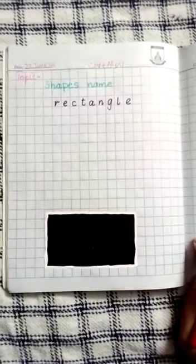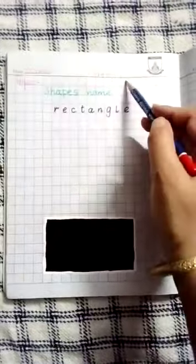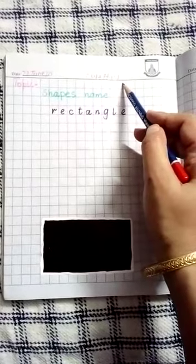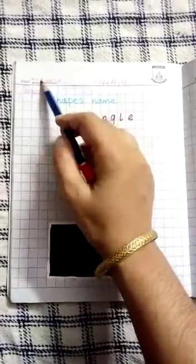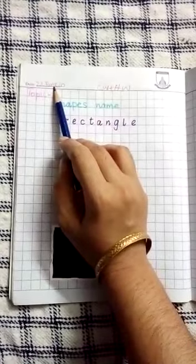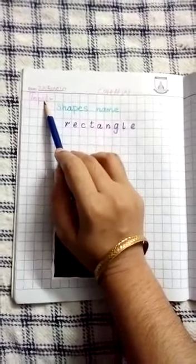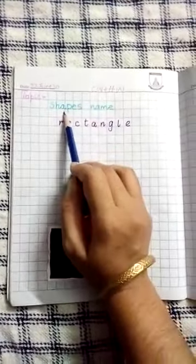The next subject is math on copy work. First of all we will write CW plus HW at the top of the page and date at the left corner: 22 June 2020. Topic, the first line on notebook, and caption shapes name.